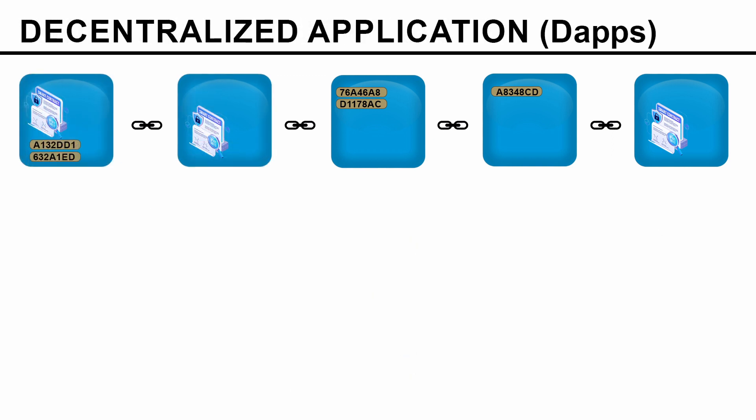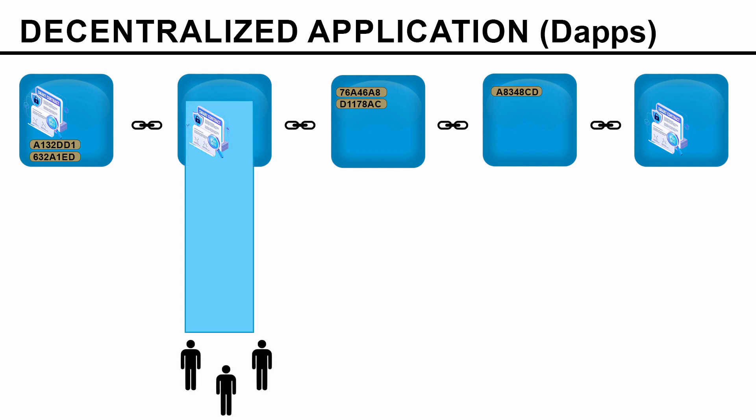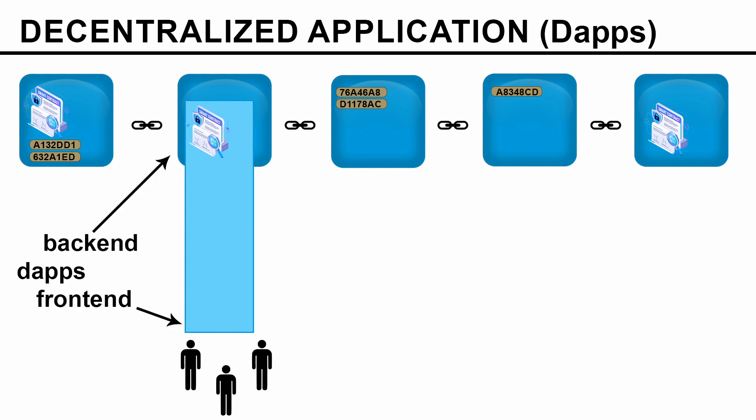Now what exactly is a dApp, or decentralized application? It is an interface for people to interact with something in the blockchain. A dApp contains a frontend and a backend. Here the backend is the smart contract. In a way, you can think of a smart contract as an API for an application to interact with the blockchain.